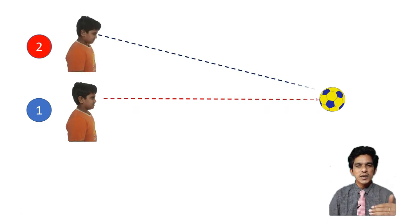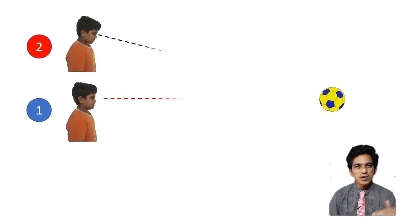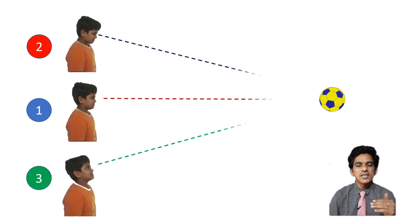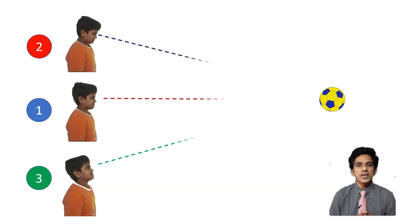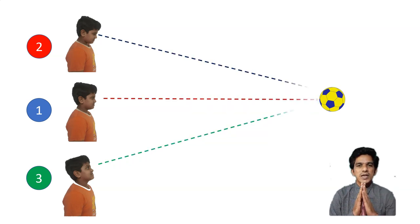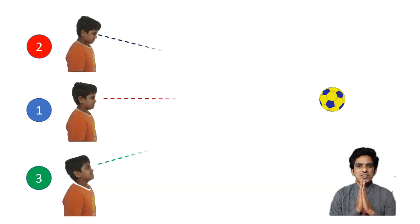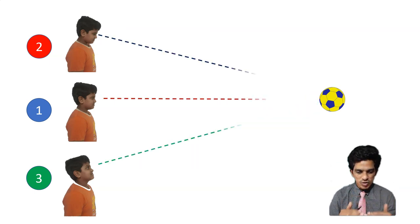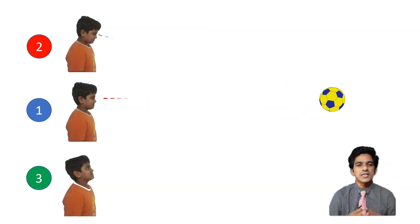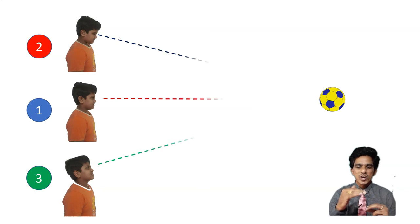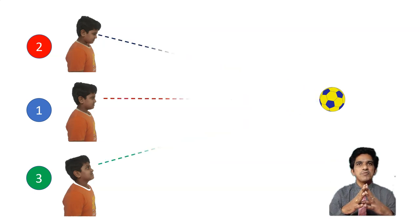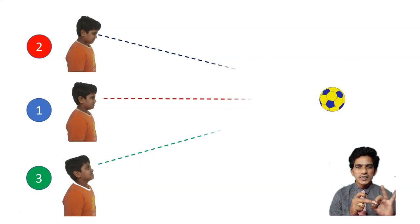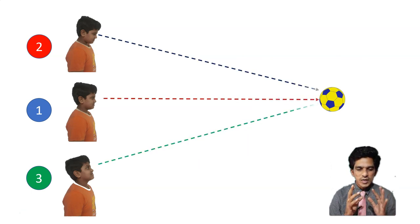Now consider the second case — this boy is looking downwards at the same ball. And in the third case, this boy is actually looking upwards at the ball. The ball is at the same position but in different directions. Whether you look straight at something, or you look upwards, or you look downwards, the direction of your vision changes.